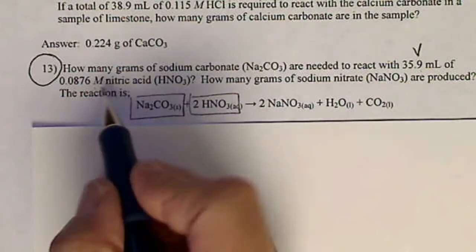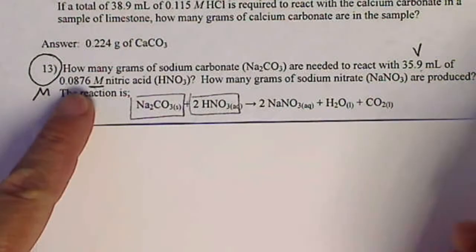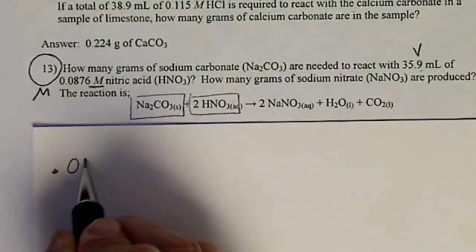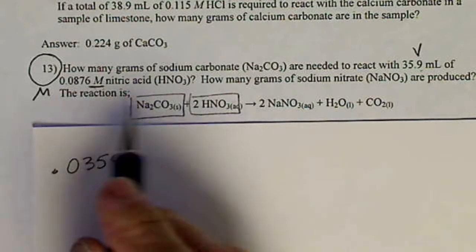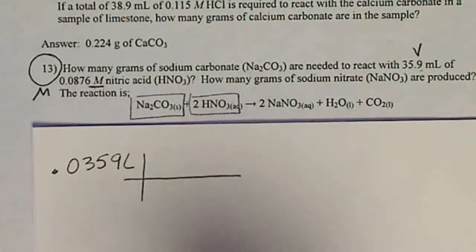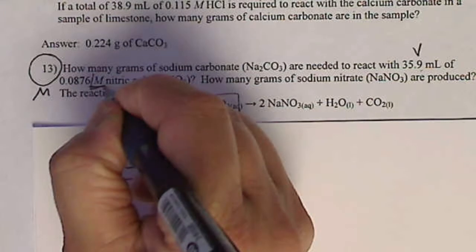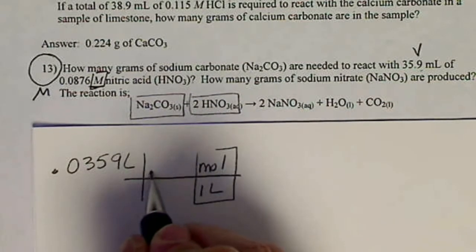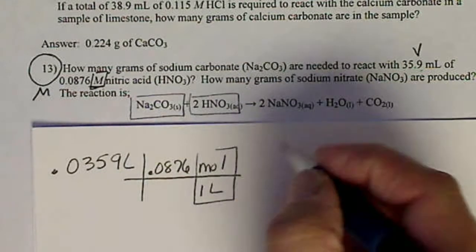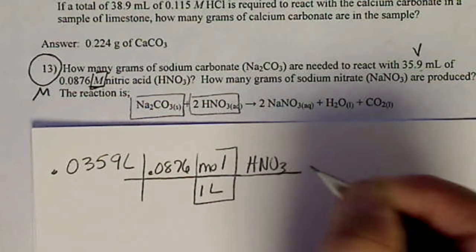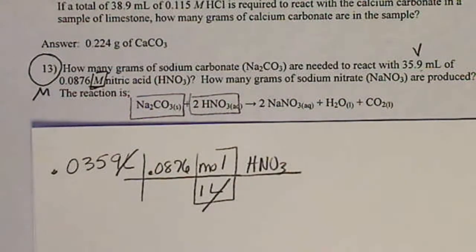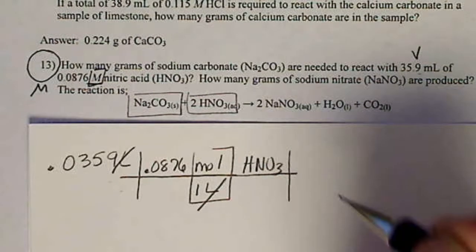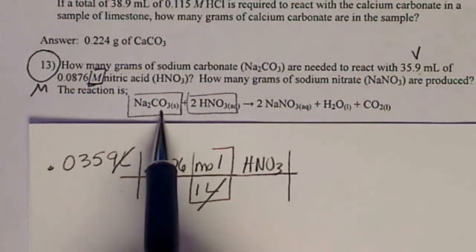So whenever we see a V and an M given, we have this volume of this molarity. I'm going to write this volume in liters before I get started: 0.0359 liters. Capital M is a conversion factor. M means mole per 1 liter. So that number, 0.0876, and that's moles of HNO3. My liters cancel. So I'm going to go, this is really molarity times volume, or volume times molarity.